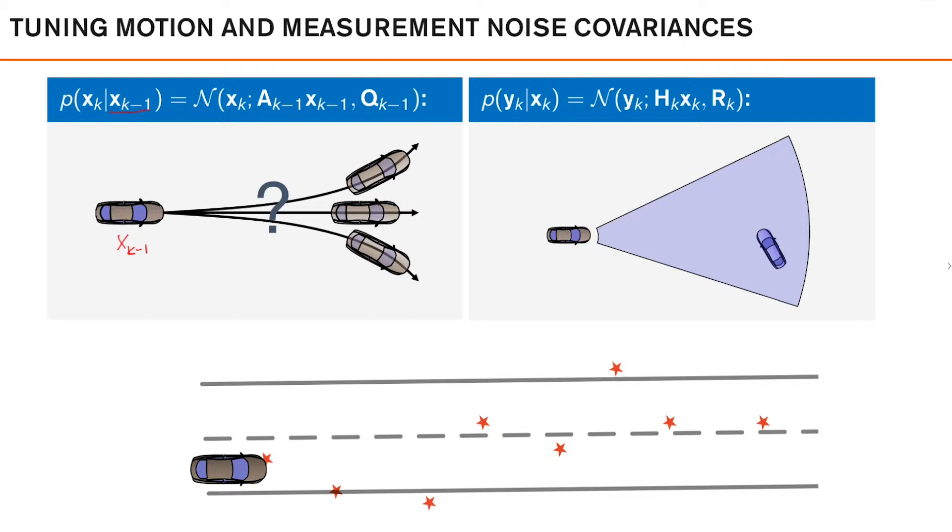Then the model describes where we expect the vehicle to be. So, this perhaps here. This is then the deterministic function of our previous state.